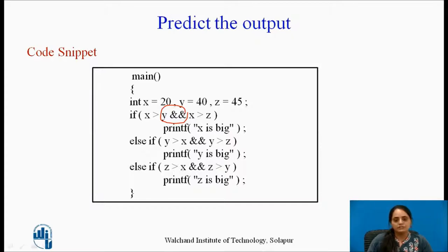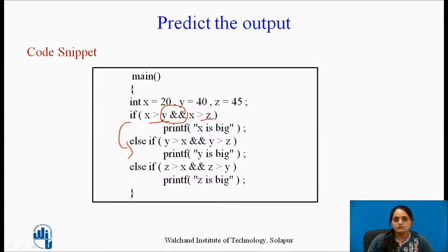For the given values of x, y, and z: x is not greater than y, so the if condition is false. Then y is greater than x — that condition is true — but y is not greater than z, so this total condition evaluates to false. The program then checks the third condition: since z is greater than both x and y, the output is 'z is big'.